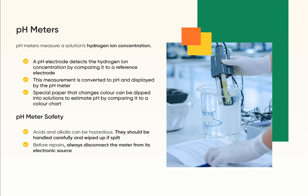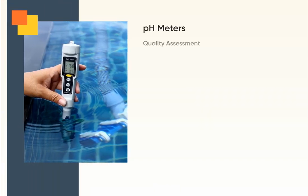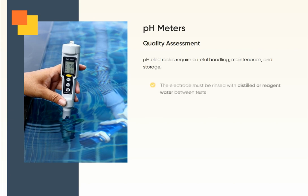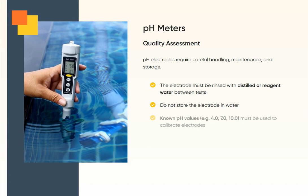pH meter safety: Acids and alkalis can be hazardous. They should be handled carefully and wiped up if spilt. Before repairs, always disconnect the meter from its electronic source. Quality assessment: pH electrodes require careful handling, maintenance, and storage. The electrode must be rinsed with distilled or reagent water between tests. Do not store the electrode in water. Known pH values — e.g., 4.0, 7.0, 10.0 — must be used to calibrate electrodes. Only test room temperature reagents.